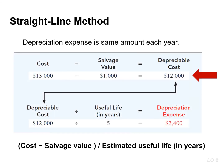Depreciable cost represents the total amount subject to depreciation. It is the cost of the plant asset less its salvage value. To compute the annual depreciation expense, we simply divide the depreciable cost by the estimated useful life. So in this example, we divide $12,000 by 5 years to arrive at a depreciation expense of $2,400.